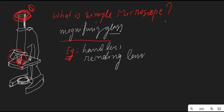The image produced by the simple microscope is virtual and cannot be projected on a screen like a real image. There are other different types of microscopes we will discuss in upcoming videos, but in the case of a simple microscope, you cannot project this produced image on a screen.